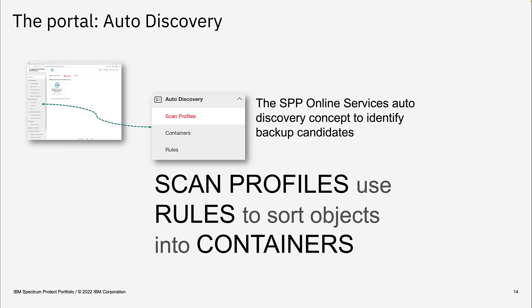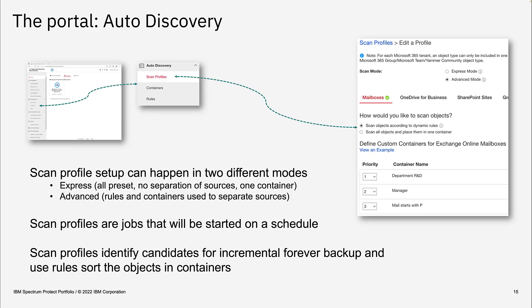You define scan profiles for the different data types — Exchange, Teams, OneDrive, SharePoint — and you can define rules that allow fine-grained sorting of objects into virtual containers. Scan profiles can be set up in two modes: express mode, where nothing needs to be configured and all is preset with no separation of sources and just one container, or advanced rule mode, which allows you to generate rules and separate the resources into multiple containers.